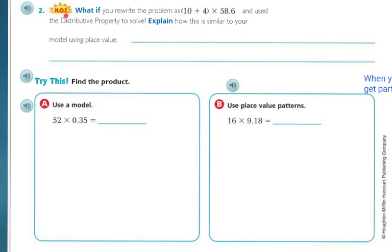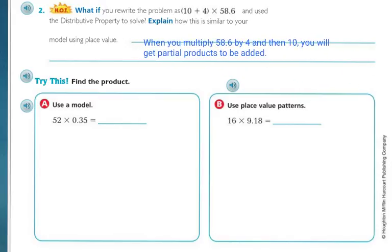Let's look at the hot problem. What if you rewrite the problem as (10 plus 4) times 58.6 and use the distributive property to solve? Explain how this is similar to the model using place value. When you multiply 58.6 by 4 and then by 10, you get partial products that are added together — and that's essentially what you're doing in the model.